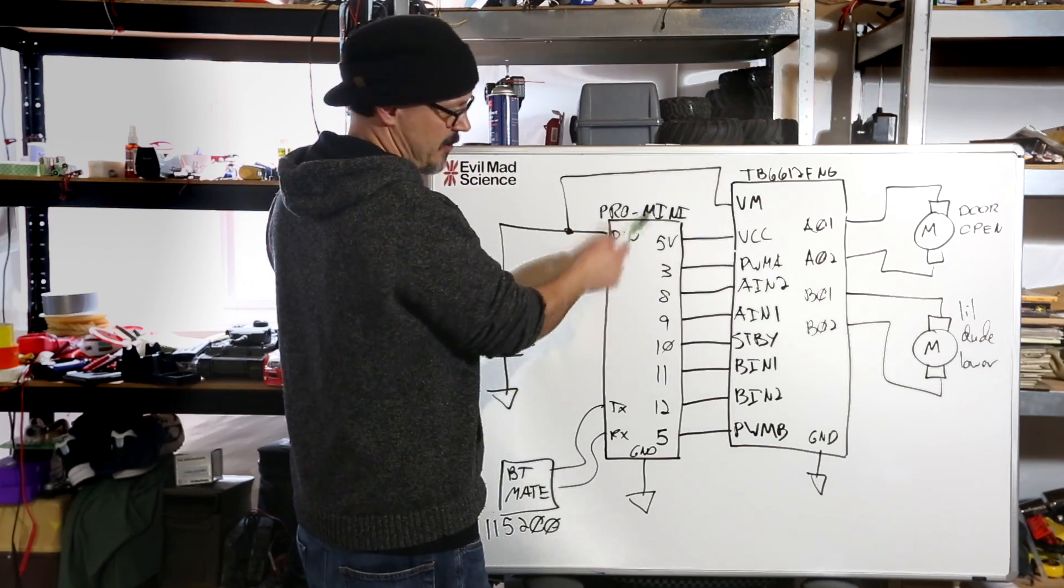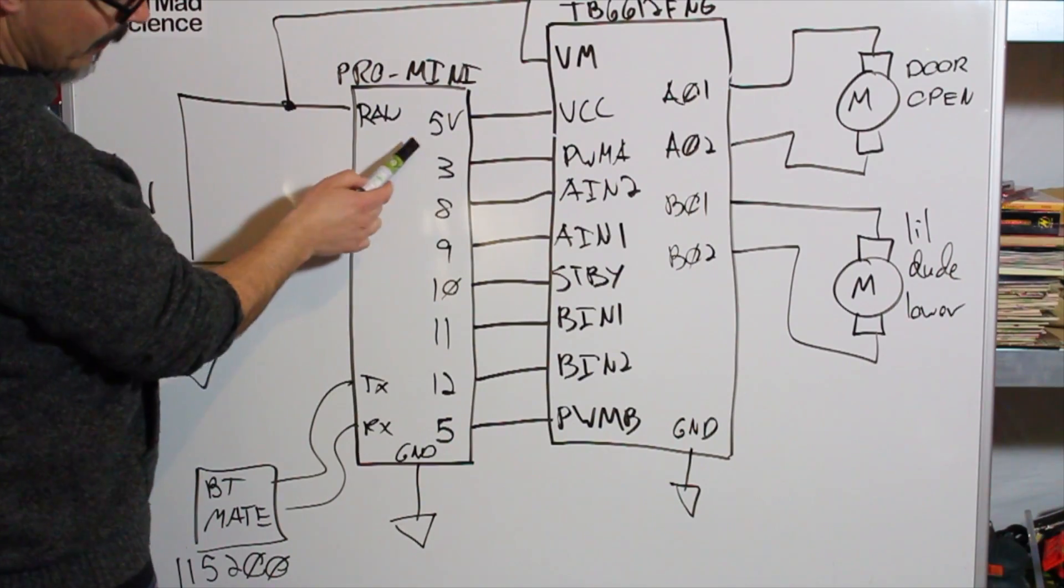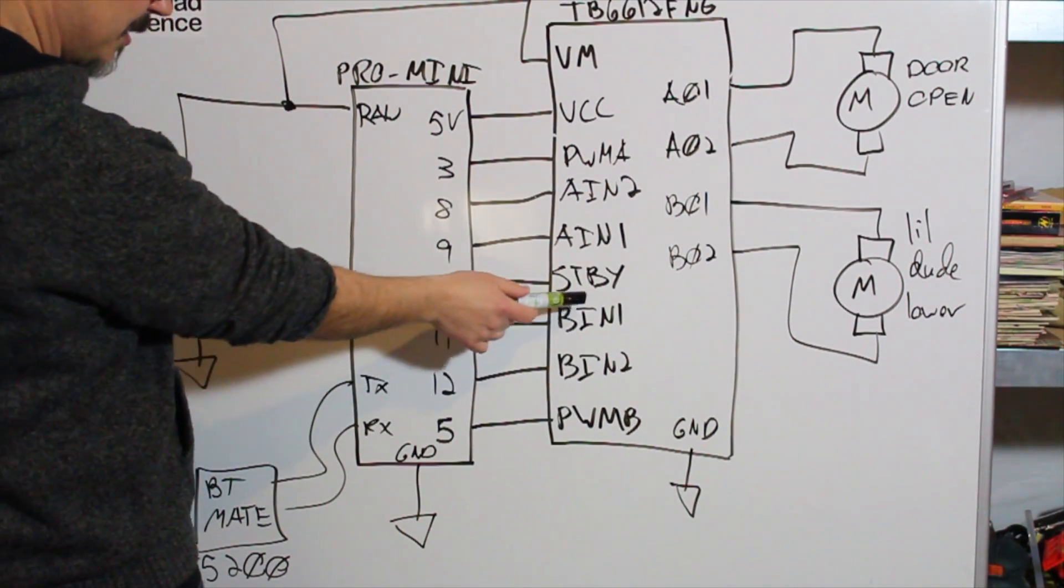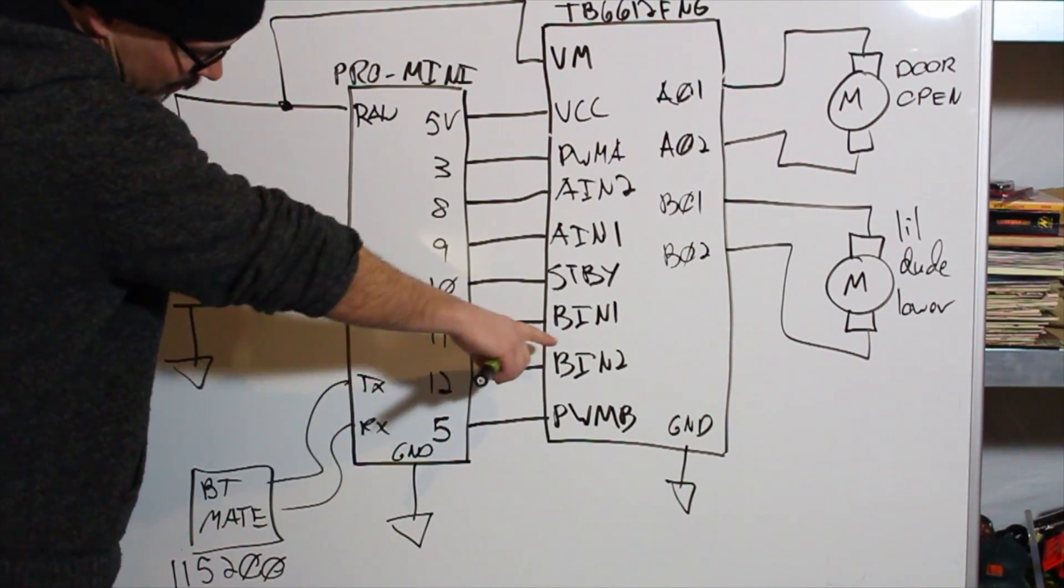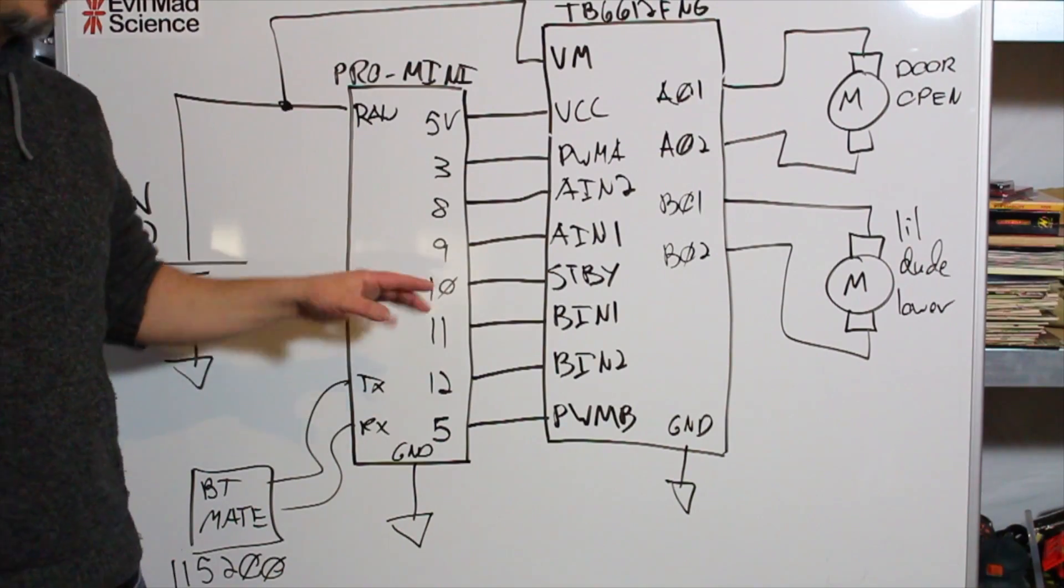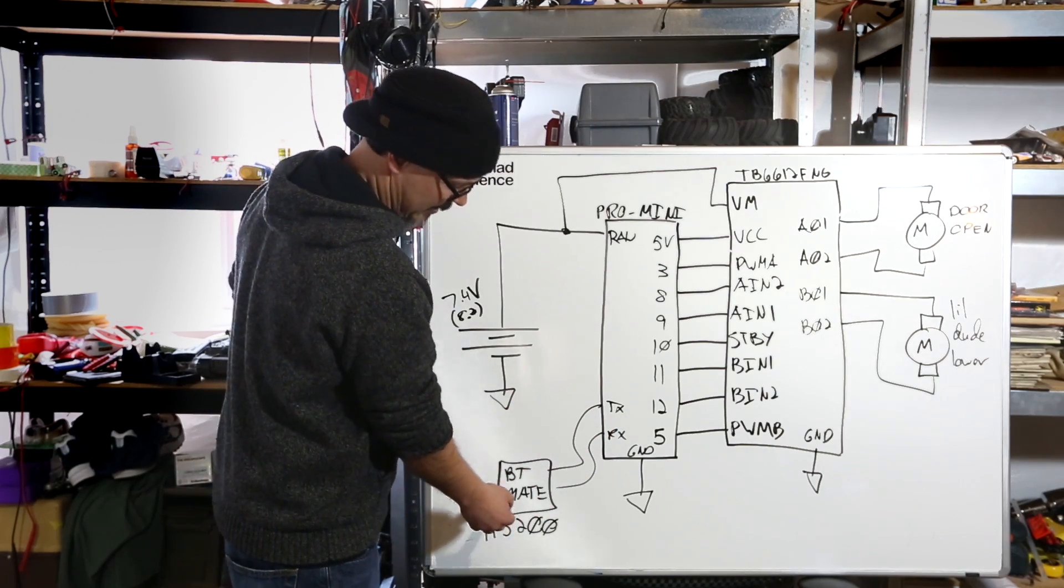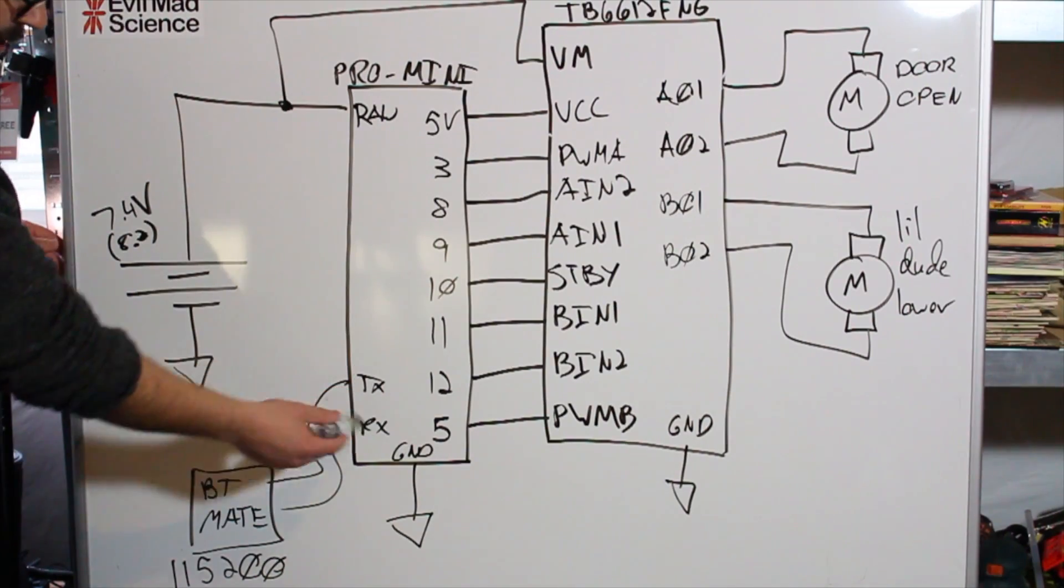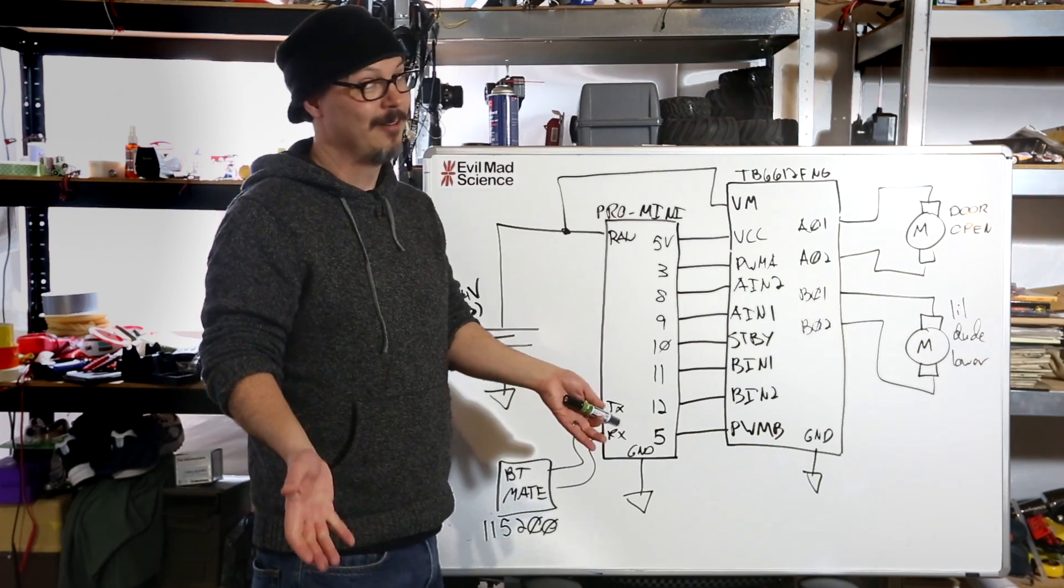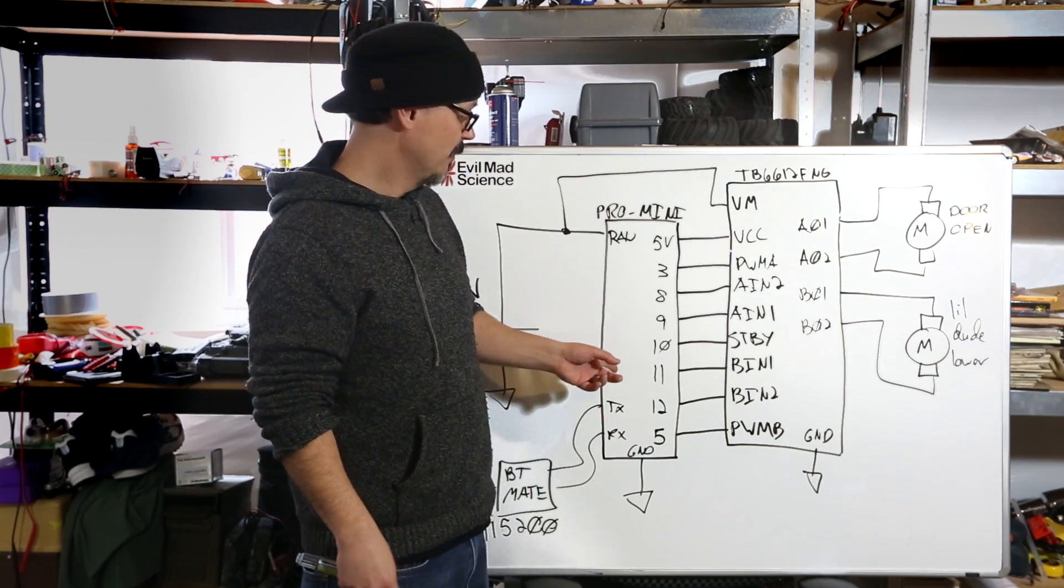The wiring, pretty simple. This is almost exactly out of Adam's example. 5 volt from the Pro Mini goes to VCC. That's me. And these are all the Arduino pins. 3 goes to PWMA. 8 goes to AN2. 9 goes to AN1. 10 goes to standby. 11 goes to BN1. 12 goes to BN2. And 5 goes to PWMB. And of course, these are the pins right off the Pro Mini. And these are the labelings on the TB6612 FNG breakout board. Now you also see down here, I sort of put this in just so you know it's there. TX and RX go to the Bluetooth Mate. And the reason why I kind of gloss over that is because the Bluetooth Mate just plugs into the FTDI port on the Pro Mini. It's really easy to do. These things default to 115200. So watch that when you're doing your code, you got to set it for 115200.